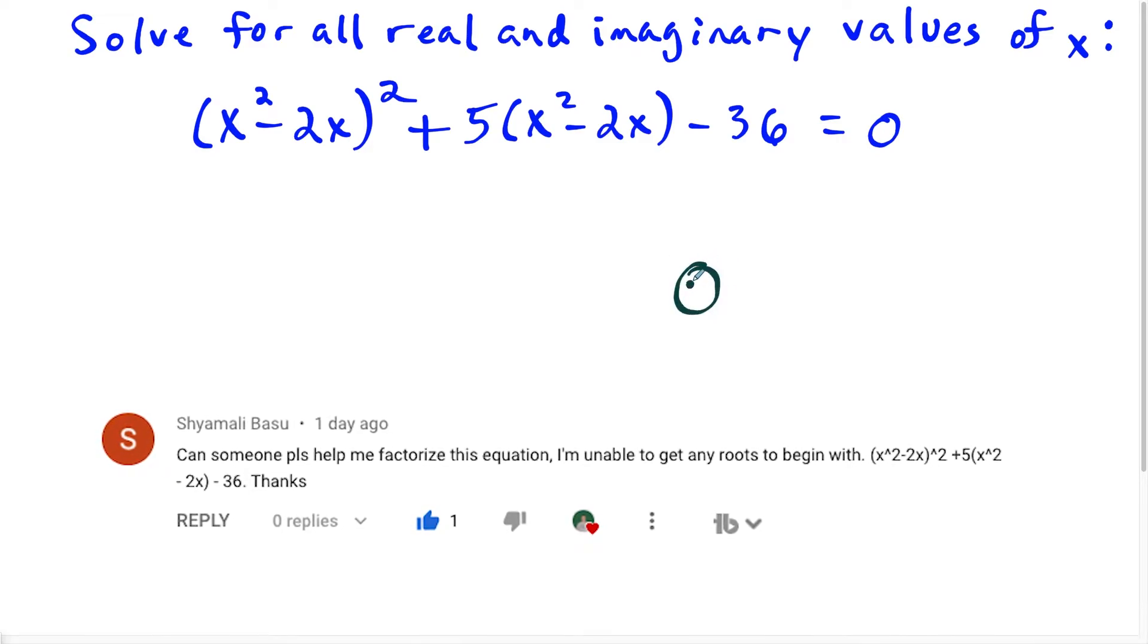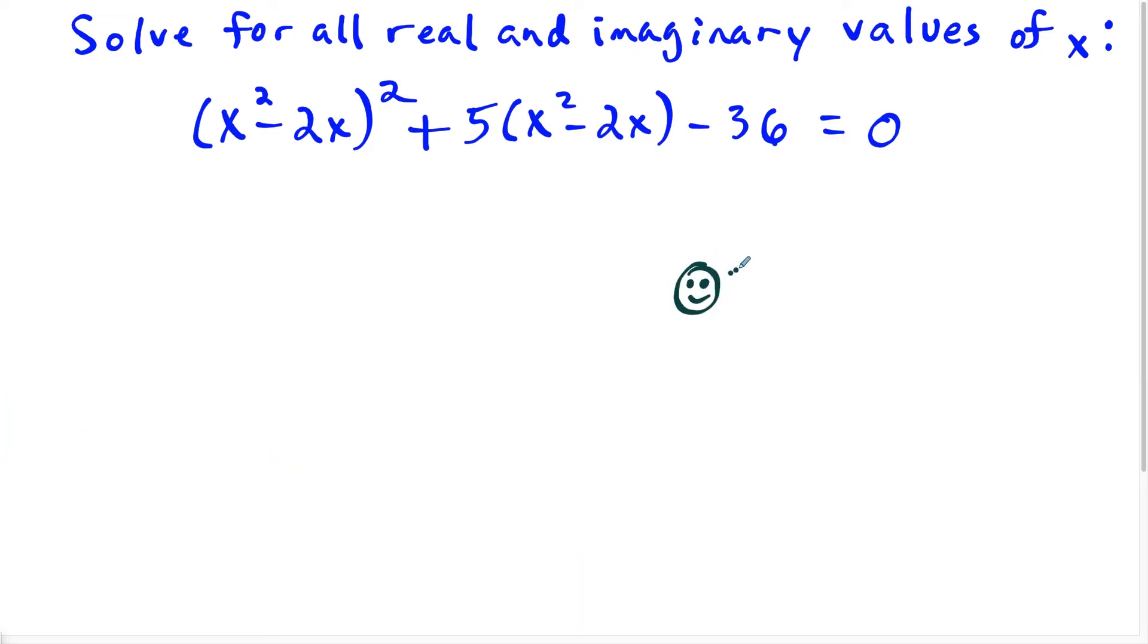This one here, it was a bit of a strange question, but the first thing that jumped out at me that made this question a little bit simpler was I thought about this expression here reminded me of a quadratic equation in the form of u squared plus five times u minus 36 is equal to zero. But in this case, I would say something like u is equal to x squared minus 2x.